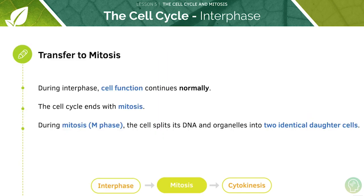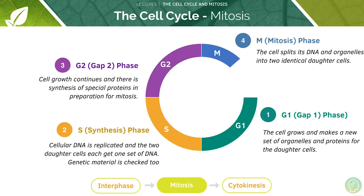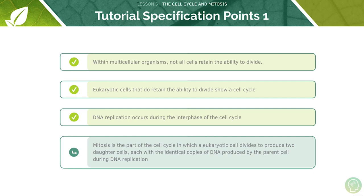During interphase the cell function will continue normally. In addition to preparing itself for cell division, the cell continues to carry out its normal functions. Hepatocytes in the liver, for example, continue to carry out their normal responsibilities of detoxification. Epithelial cells that make up the villi in the small intestine continue to absorb nutrients from digested food and transport them into the blood. The cell cycle ends with mitosis, during which the cell splits its DNA and organelles into two identical daughter cells.